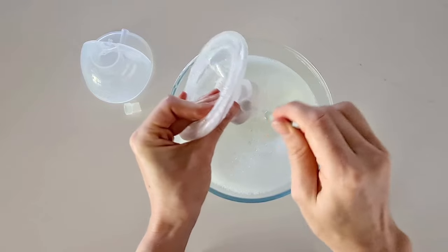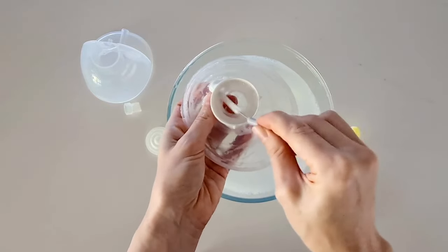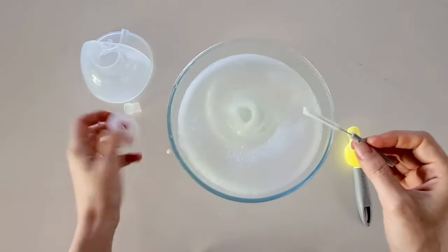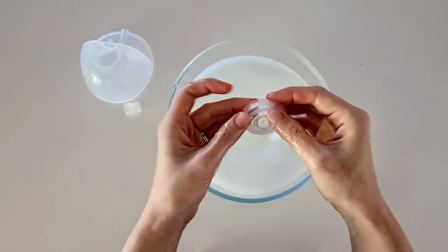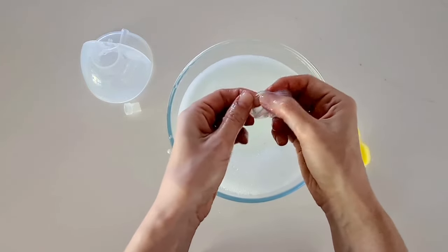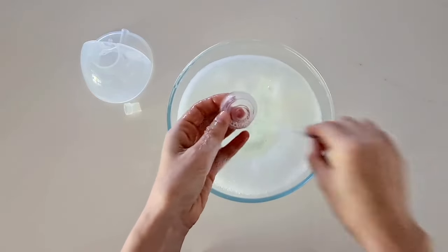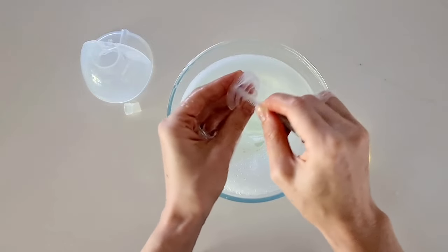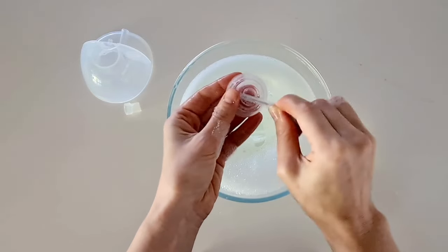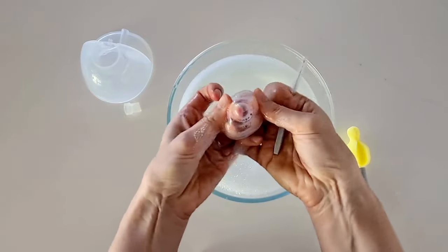This is really important to make sure that you don't have any leftover breast milk breeding bacteria. With your diaphragm there's this little lip here. You are going to want to make sure you get into all those little parts and give it a really good wash and scrub. You can pop it out a little bit.